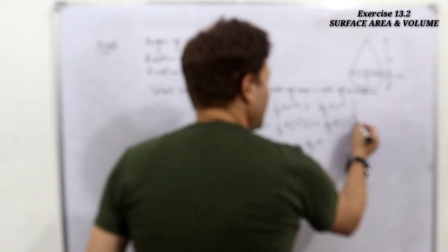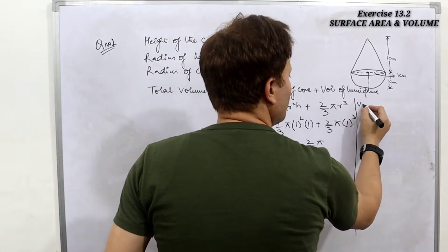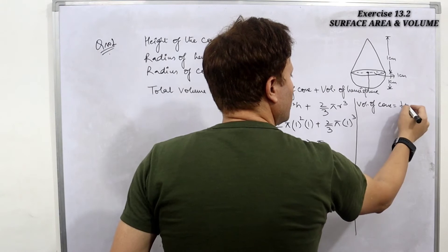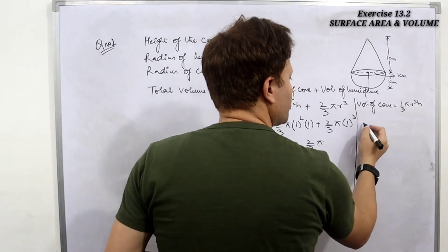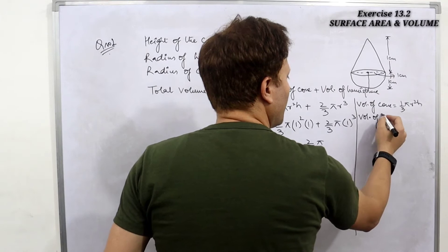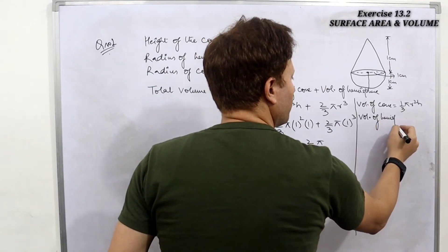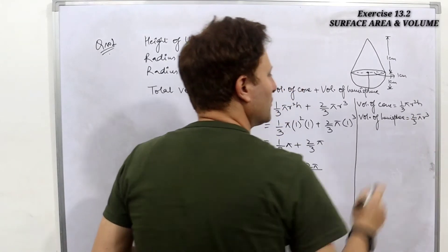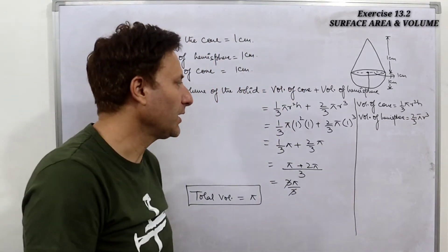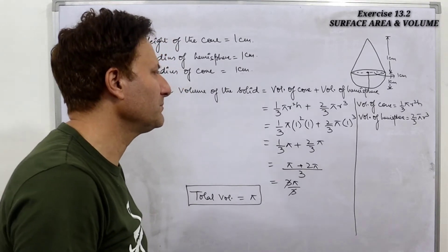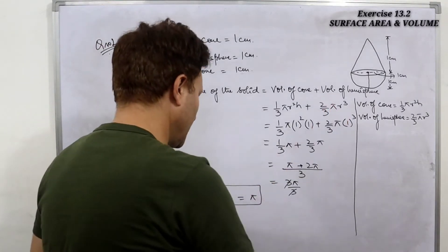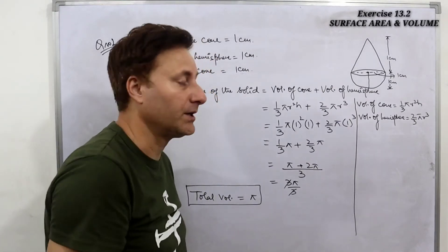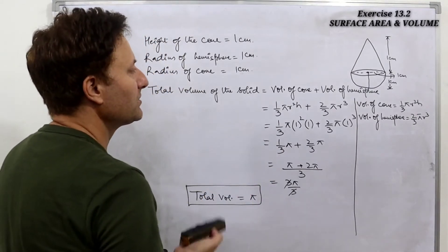Let's remember these formulas. Volume of cone is (1/3)πr²h, and volume of hemisphere is (2/3)πr³. That was question number one — a pretty simple question. Please make a note of this and memorize the formulas, as we will be using them in the next questions as well.